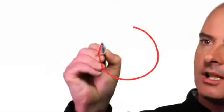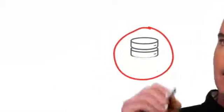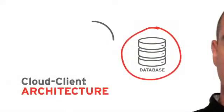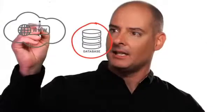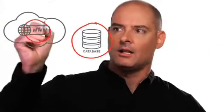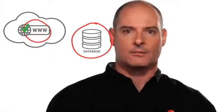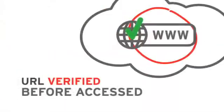Web Reputation is based on a cloud-client architecture. Essentially, we check any URL before it is accessed, whether by a browser, an email, or even an instant message.